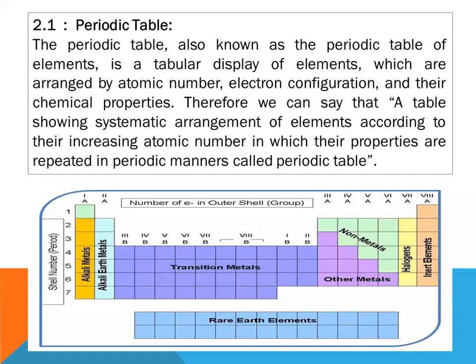Observe the diagram for periods. The number of valence electrons or outer shell electrons determines the group number, and the shell number is considered the period number. The periodic table is also known as the periodic table of elements — it is a tabular display of elements arranged by atomic number, electron configuration, and chemical properties, showing a systematic arrangement where properties repeat in a periodic manner.